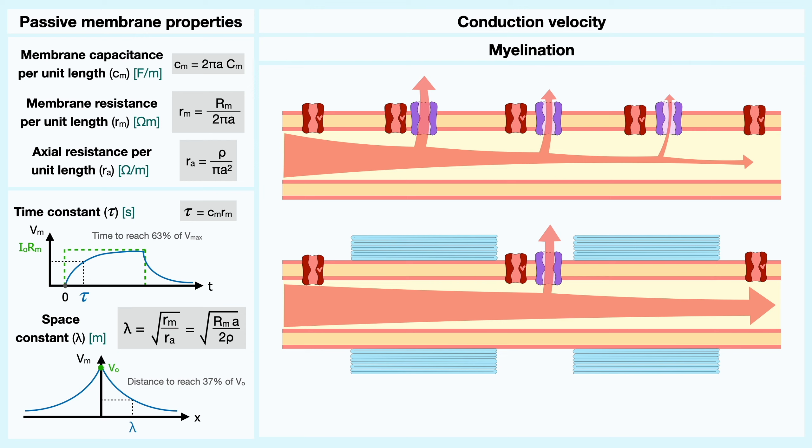To put it in passive membrane terms, the reduction of channels caused by myelination increases the membrane resistance.